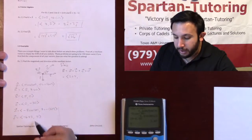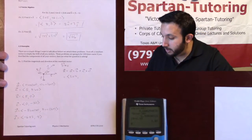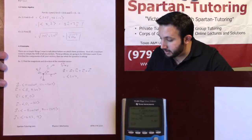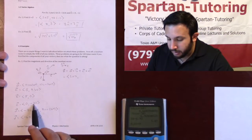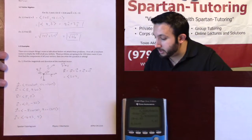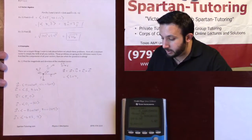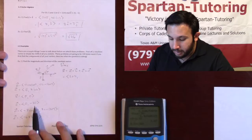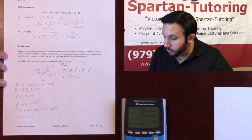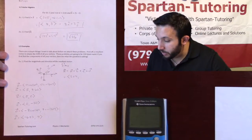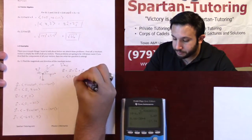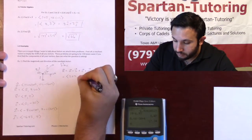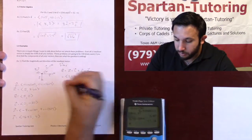And as for the y, let's figure those out. We have 8.66 plus 0 minus 30 plus 4. And what we get is negative 17.34.